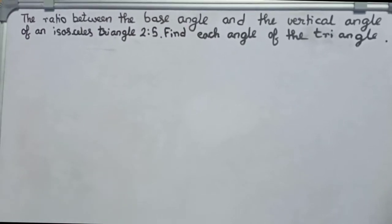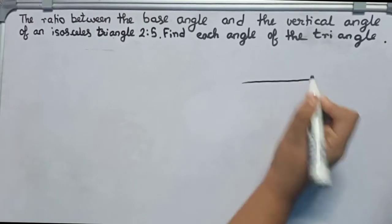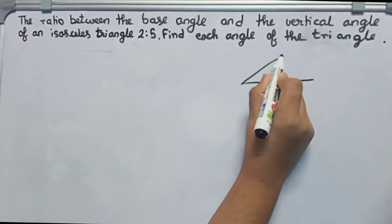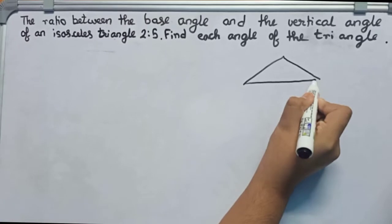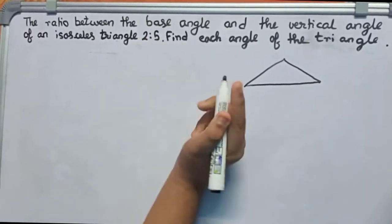So first we make a rough diagram of the isosceles triangle. An isosceles triangle has two sides equal, so therefore you make it like this. So this is our isosceles triangle. Now it is given its base angle and vertical angle.